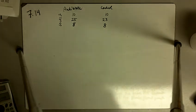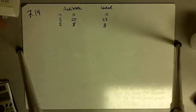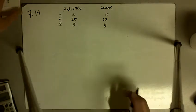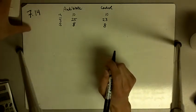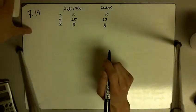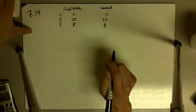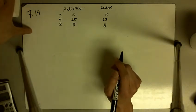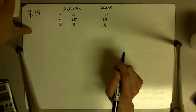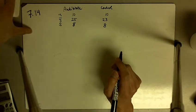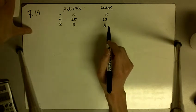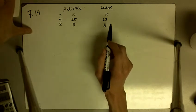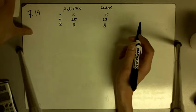7.14. Prothrombin time is a measurement of the clotting ability of blood. 10 rats were treated with an antibiotic and 10 control rats; we measured the prothrombin times in seconds.